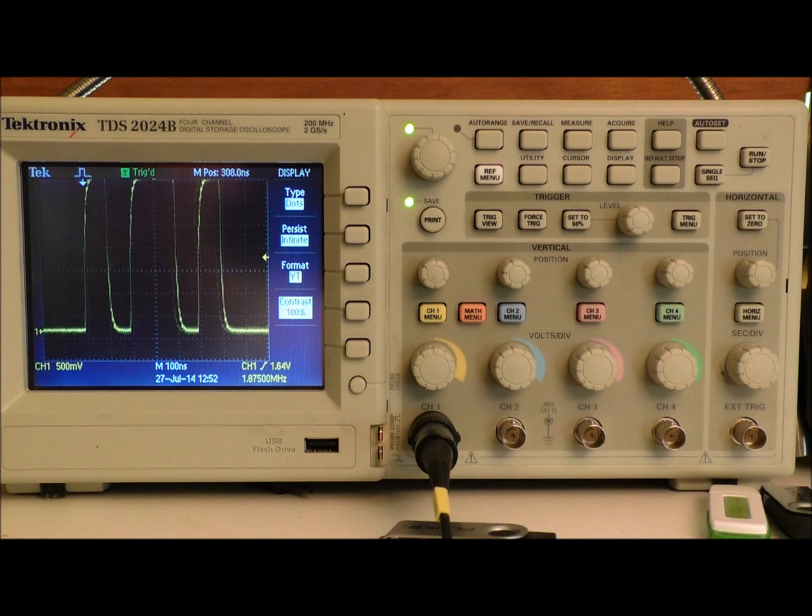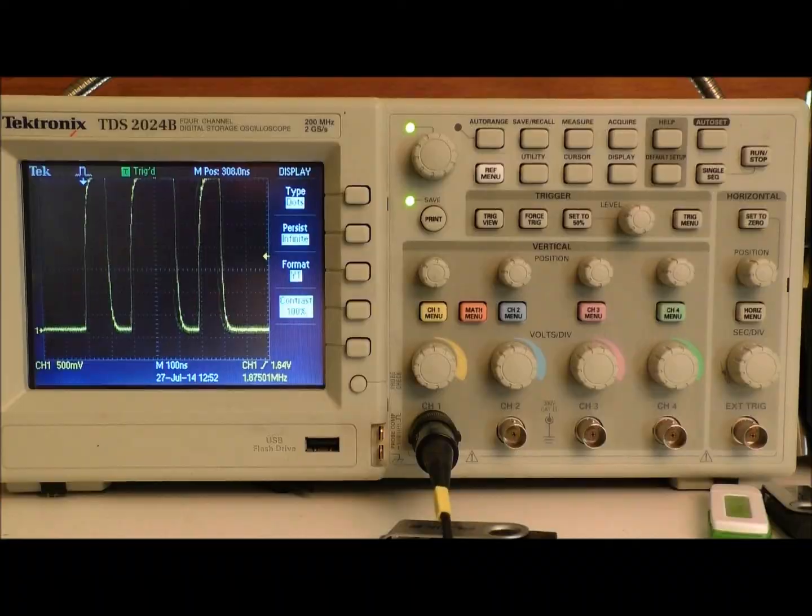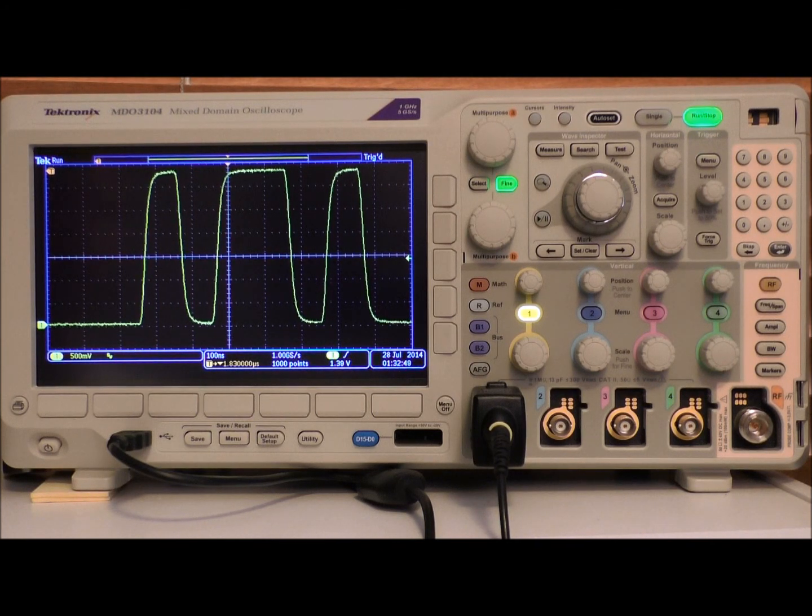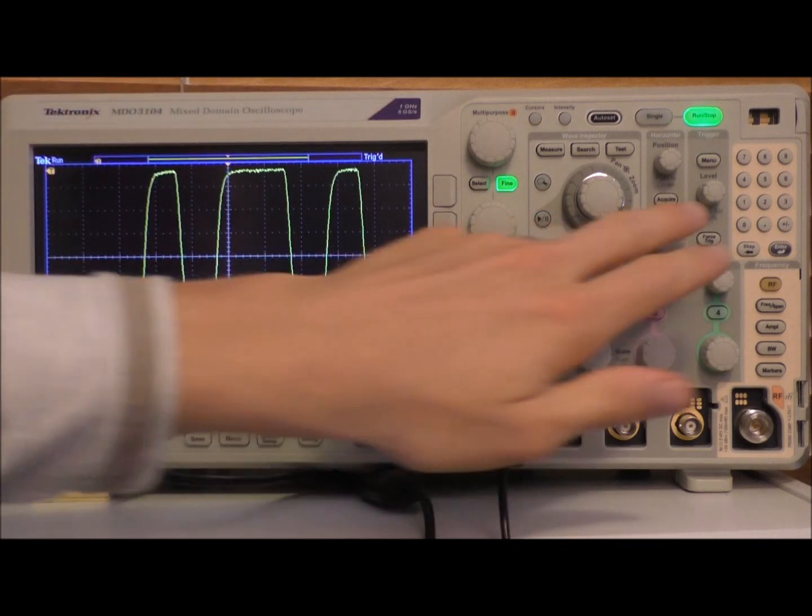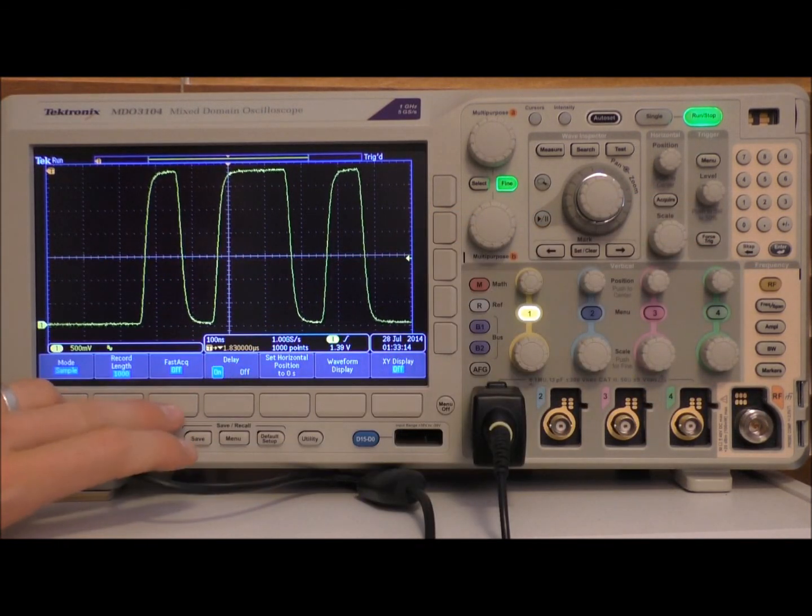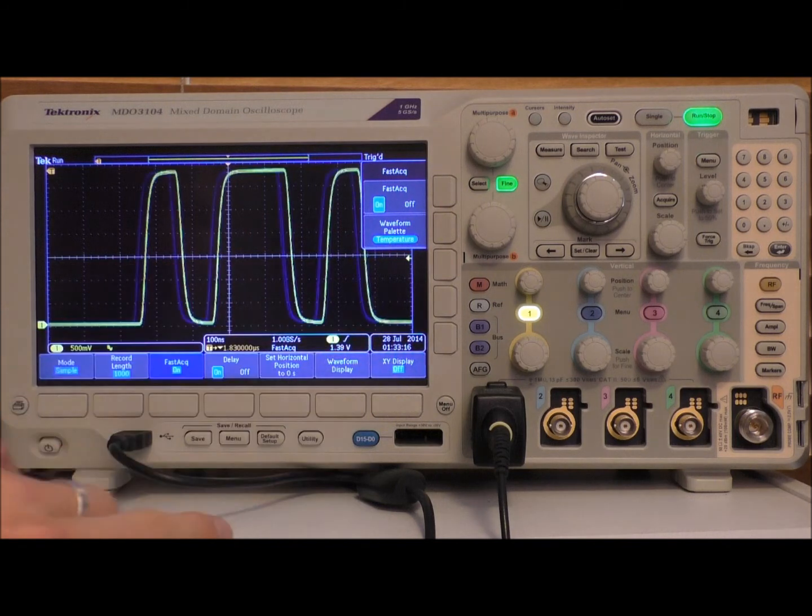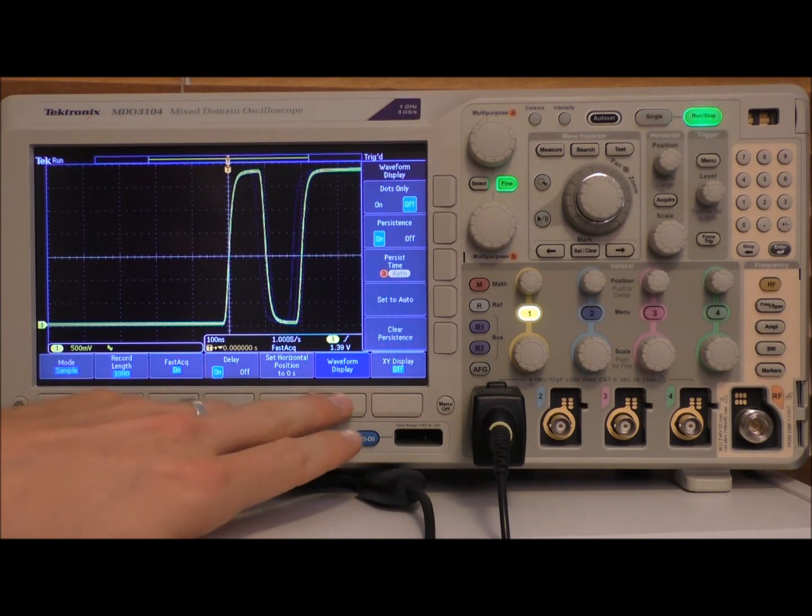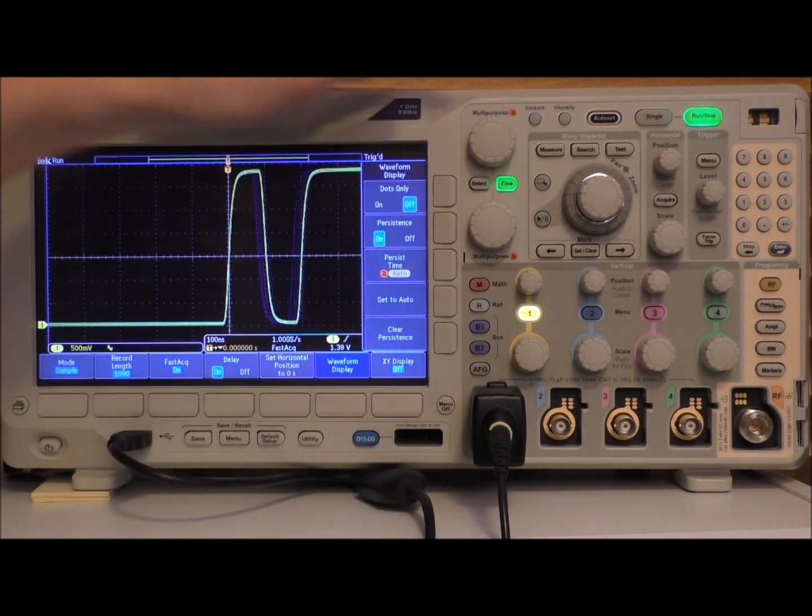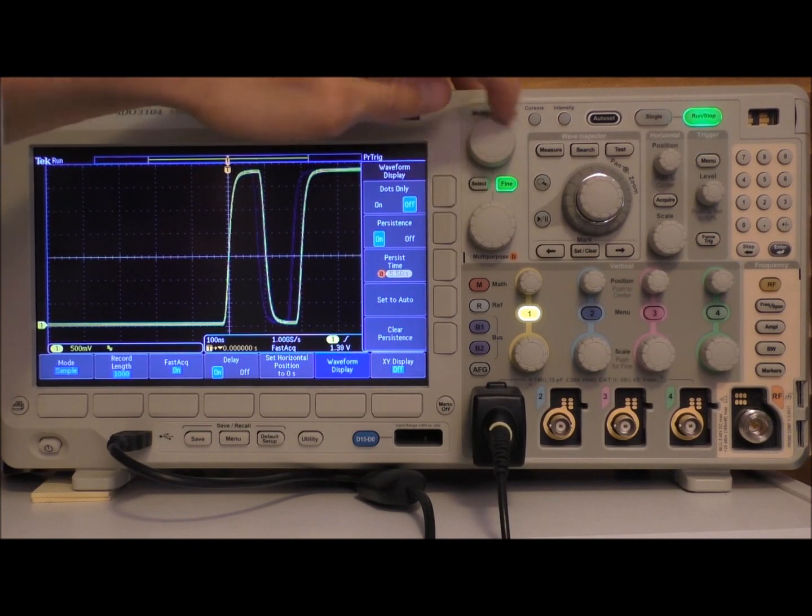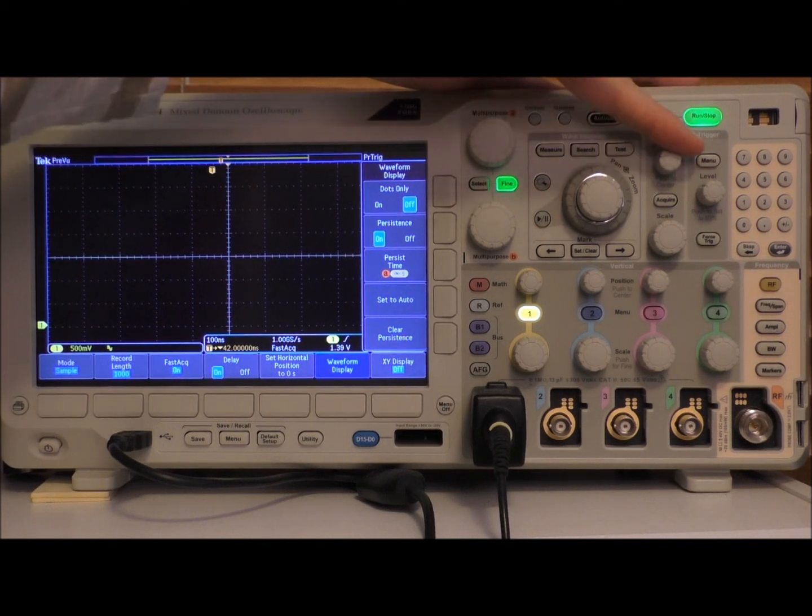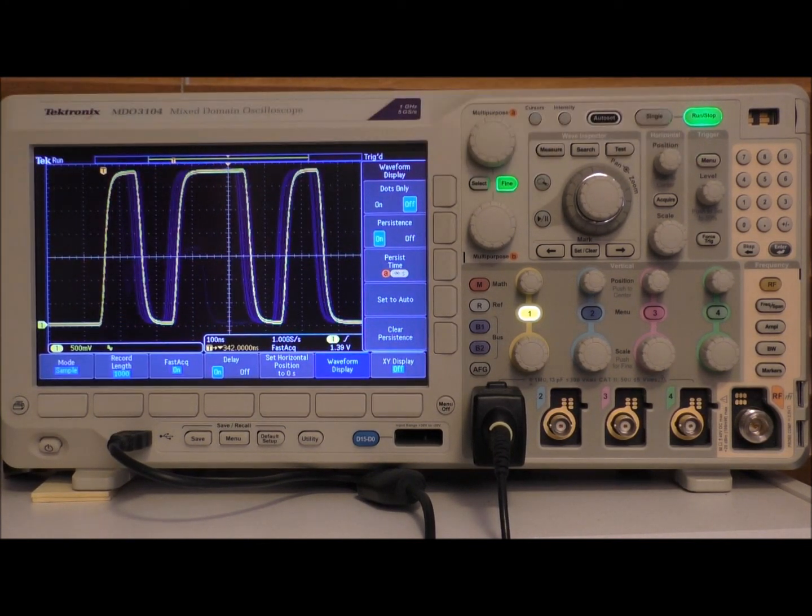That's disappointing that this is ineffective at picking up the situation right now where it uses this persist feature. If I was to look at this, I wouldn't think there was a problem and I'd probably continue on. Let's take a look at what the MDO can do. Now the MDO being a higher grade scope is obviously going to have a few more features that make it nicer for finding weird signals. By going to acquire, you get fast acq on for this, and we're going to say waveform display persistence is on and then the persistence time I'm going to increase to infinity.